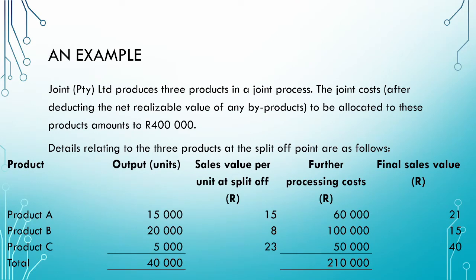Let us use an example to see how the net realizable value method works. We have a company called Joint that produces three products in a joint process. The total joint costs amount to R400,000. Note that we have already deducted the net realizable value of any byproducts in arriving at this R400,000. Always remember to adjust the joint costs for any byproducts, scrap, and waste before allocating the joint cost to the joint products.